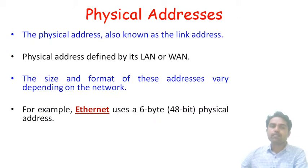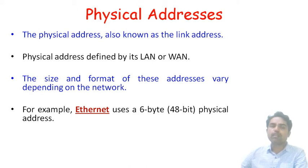Physical addresses are also known as link addresses. Physical addresses are defined by LAN and WAN technology. The size and format of these addresses vary depending on the network — whether it is a small network, a LAN, or a WAN. For example, Ethernet uses a 6-byte or 48-bit physical address.